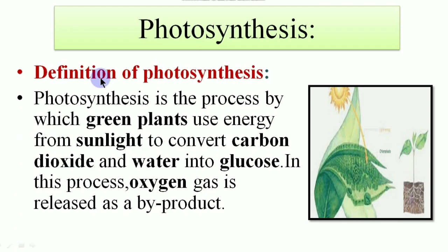Let us define the process. Photosynthesis is the process by which green plants use energy from sunlight to convert carbon dioxide and water into glucose. In this process oxygen gas is released as a by-product.